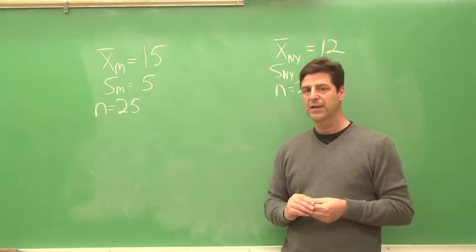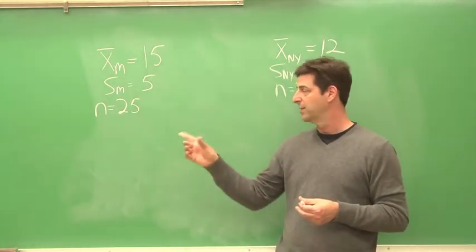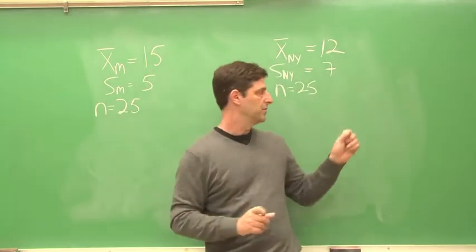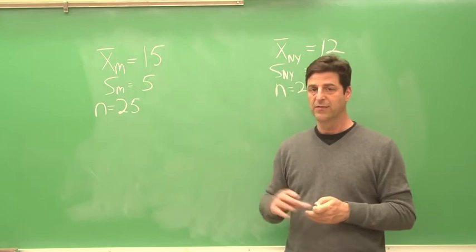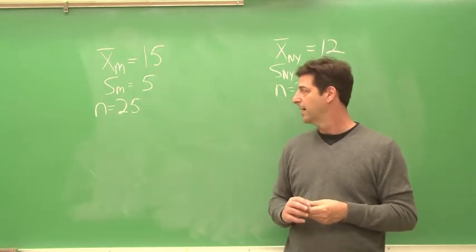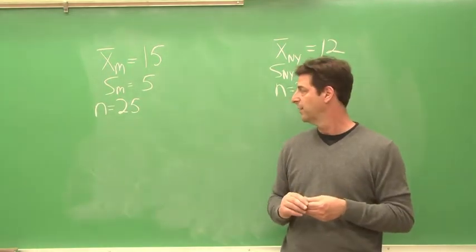So, to calculate a t-test, first you need to calculate the standard errors for each of the two samples. Now notice, my sample sizes are equal. So I can use sort of the easy formula for calculating the standard error of the pooled variance. Here's how we do it.